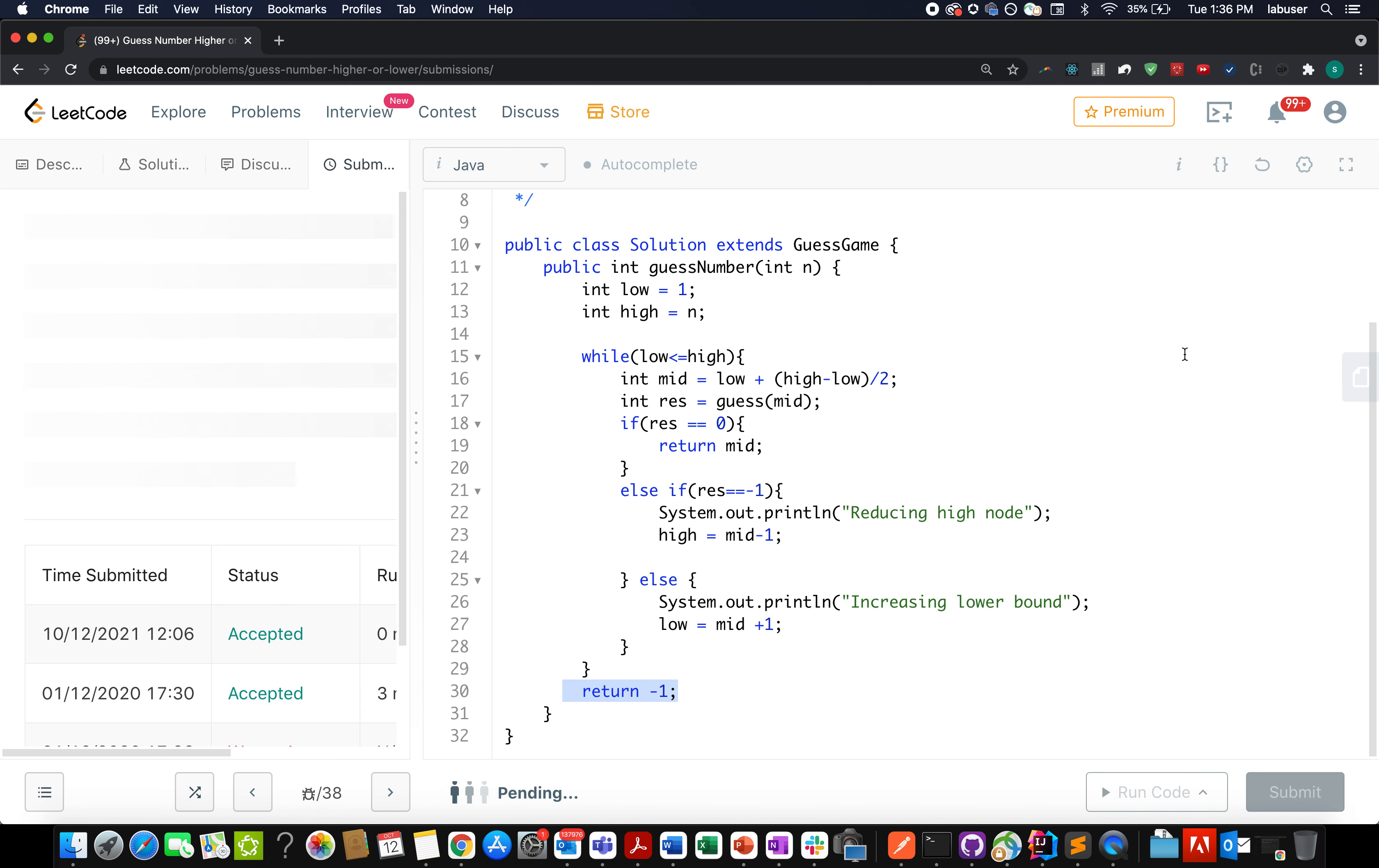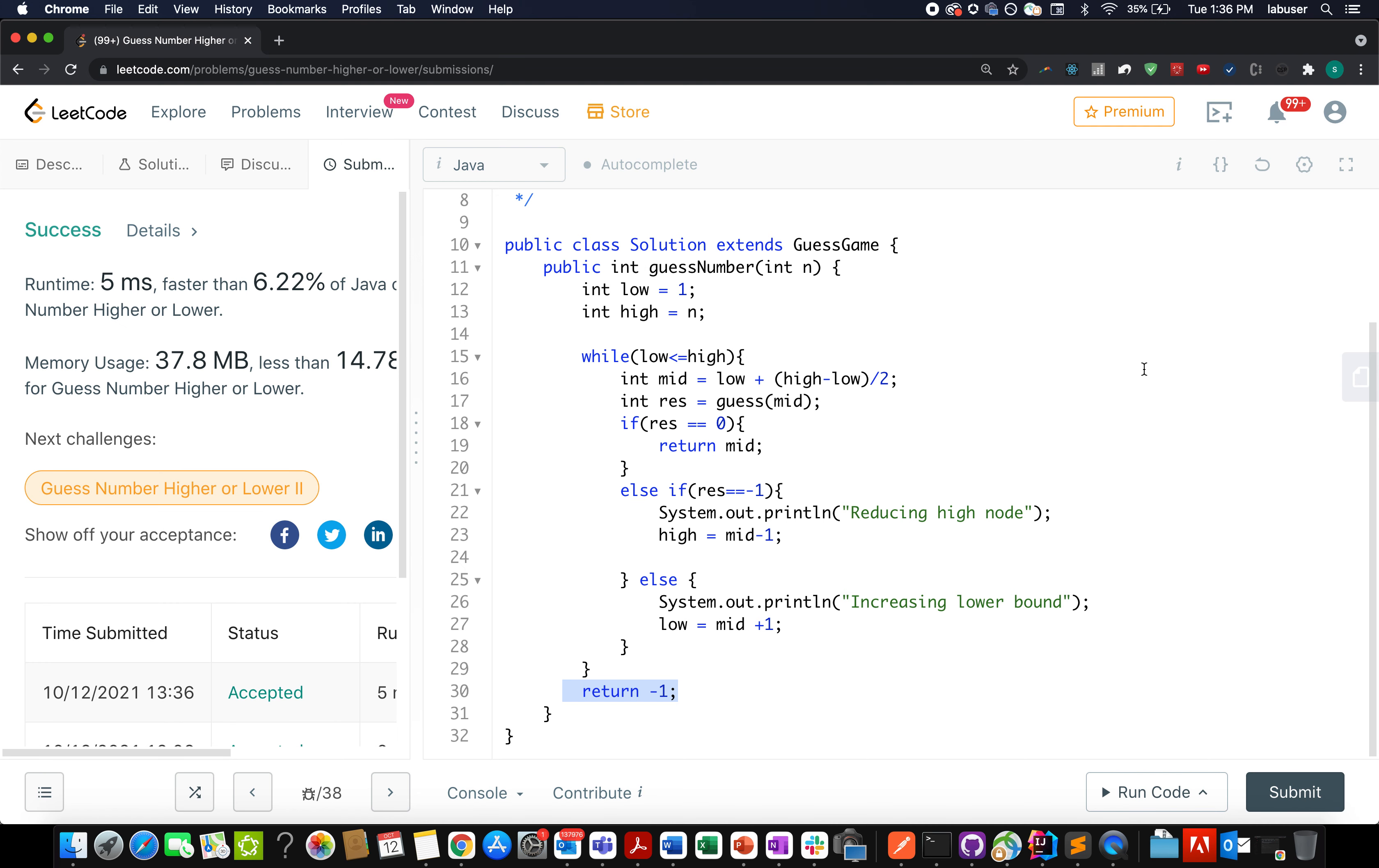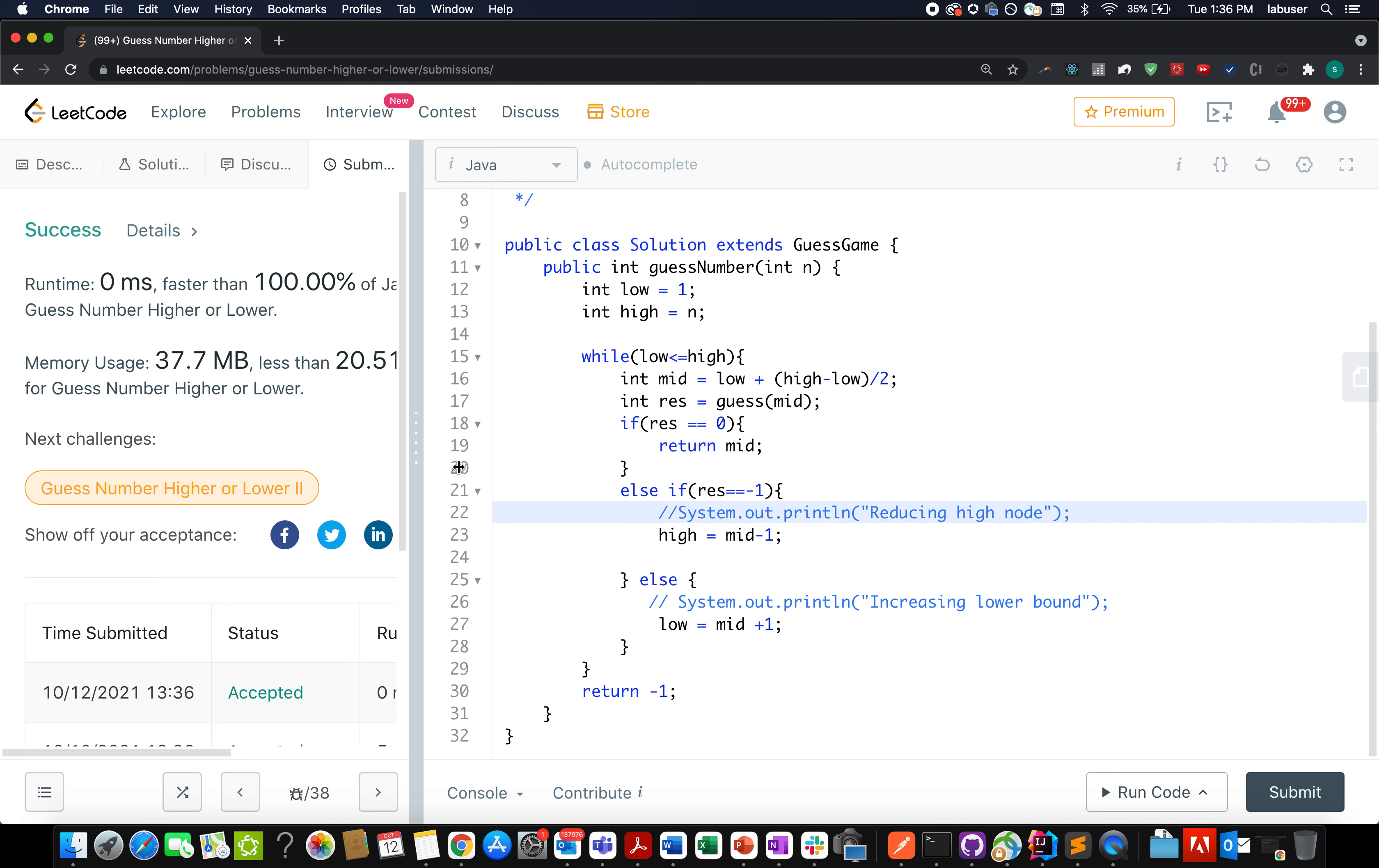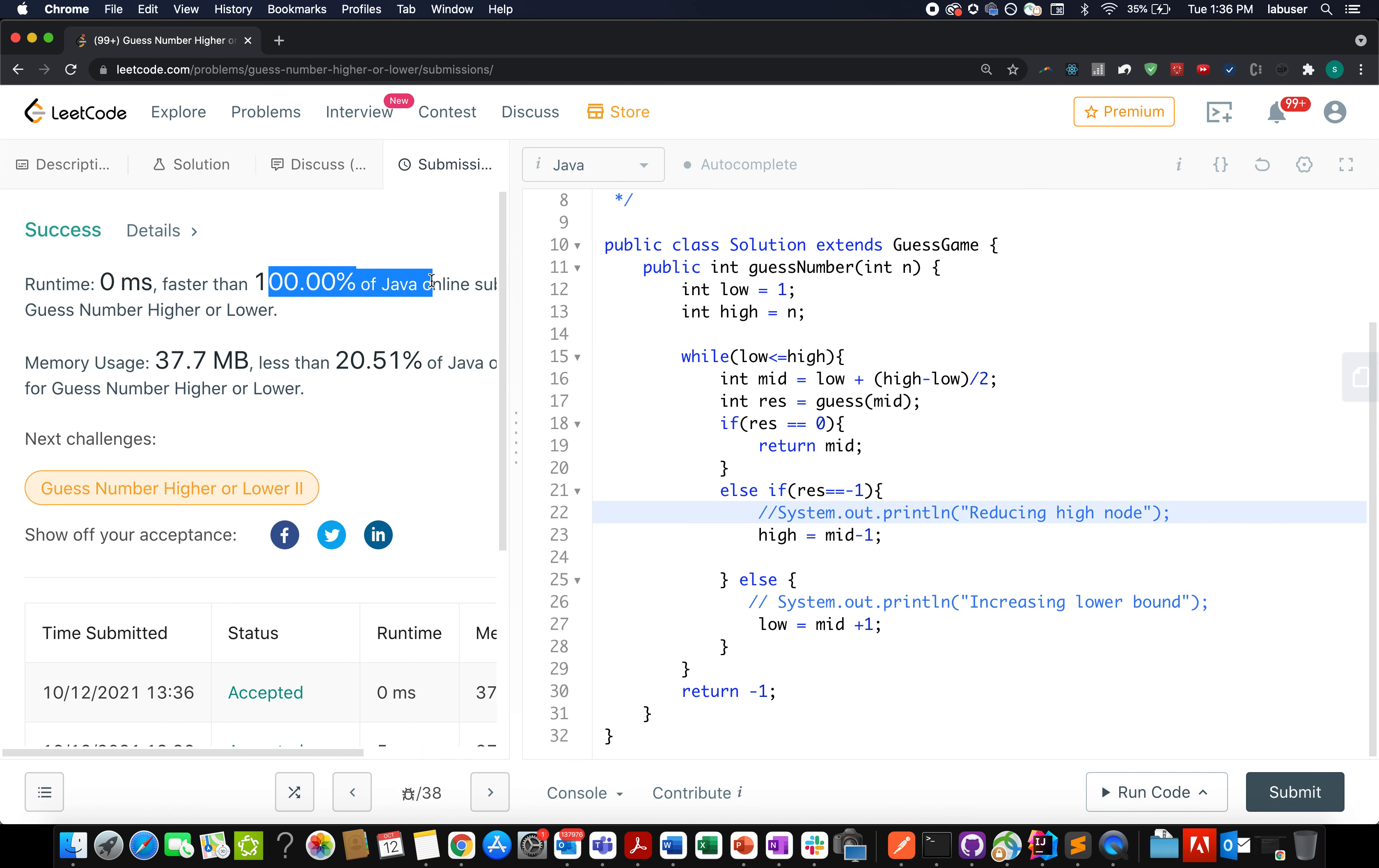Let's try and submit this. Accepted. And this is lower because of these print statements. Let's comment them out. Accepted. Great. So this was 100 percent faster, which should have been the case.